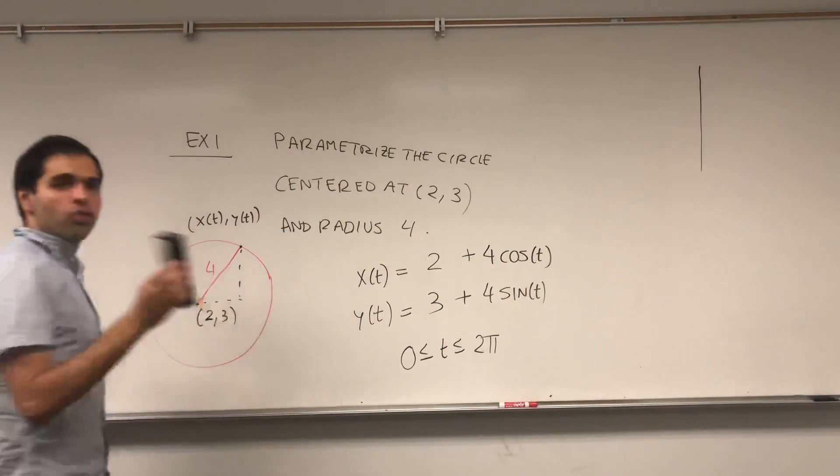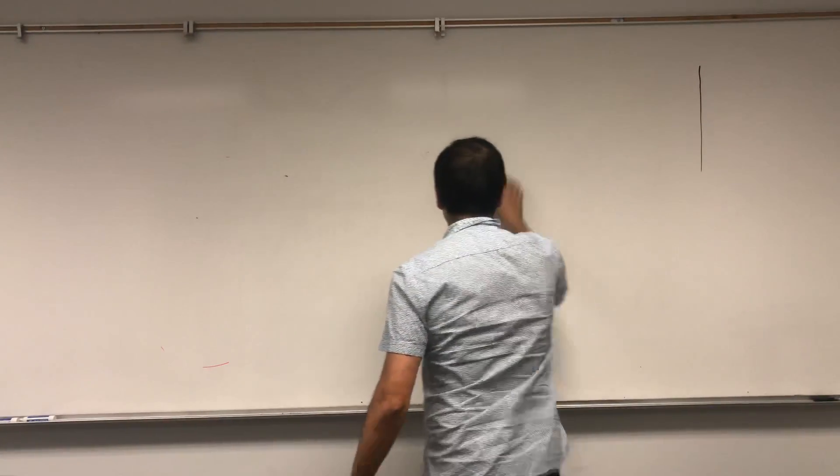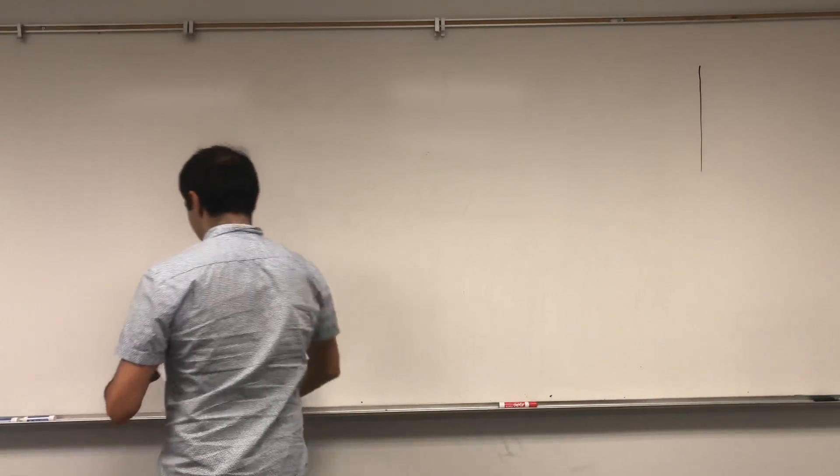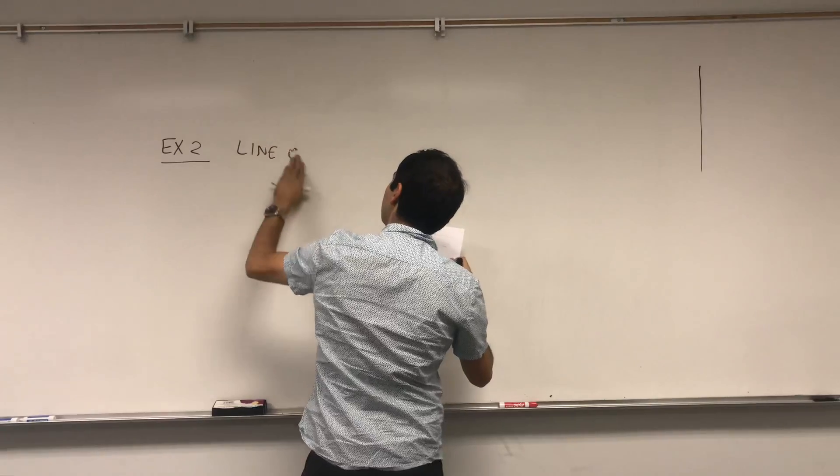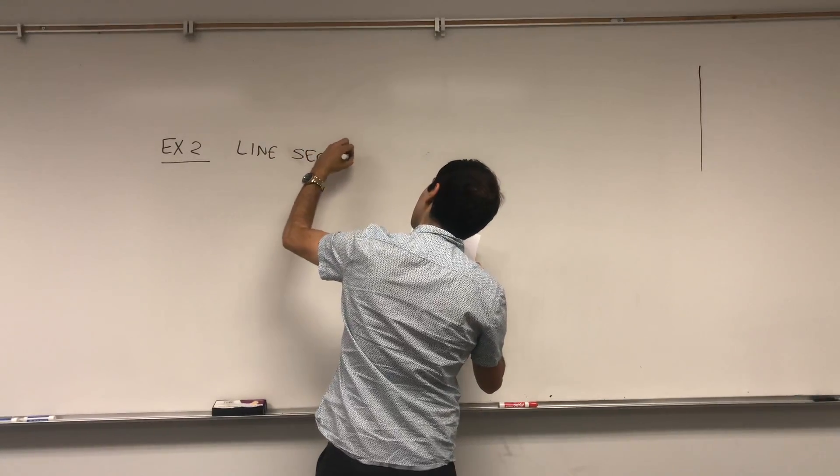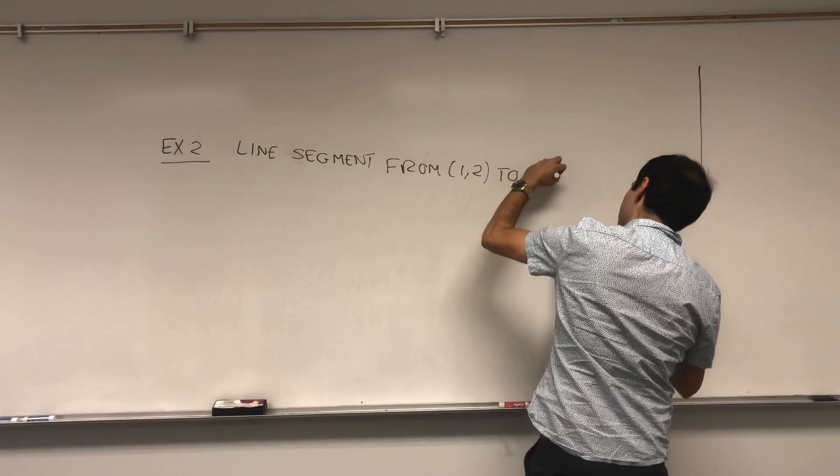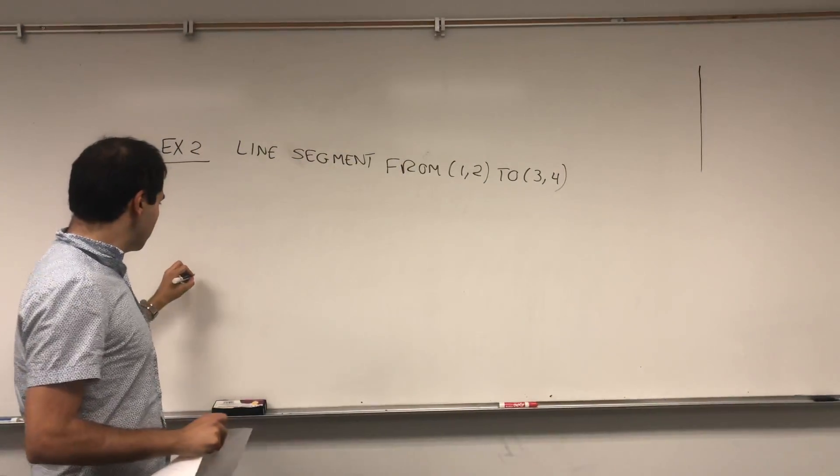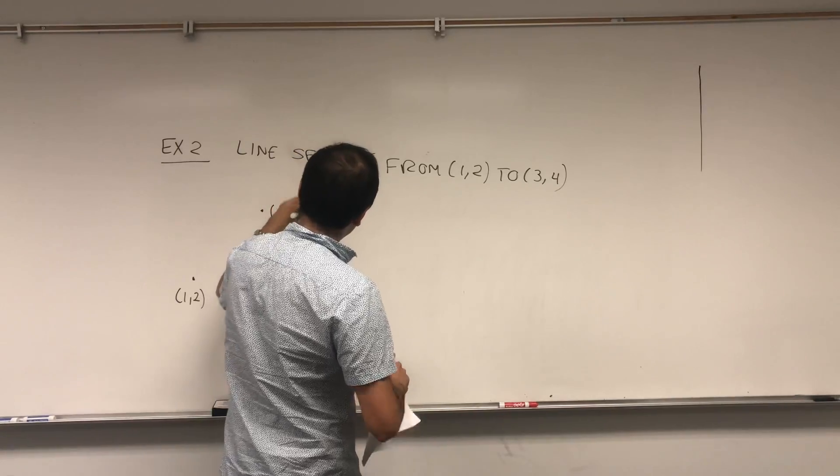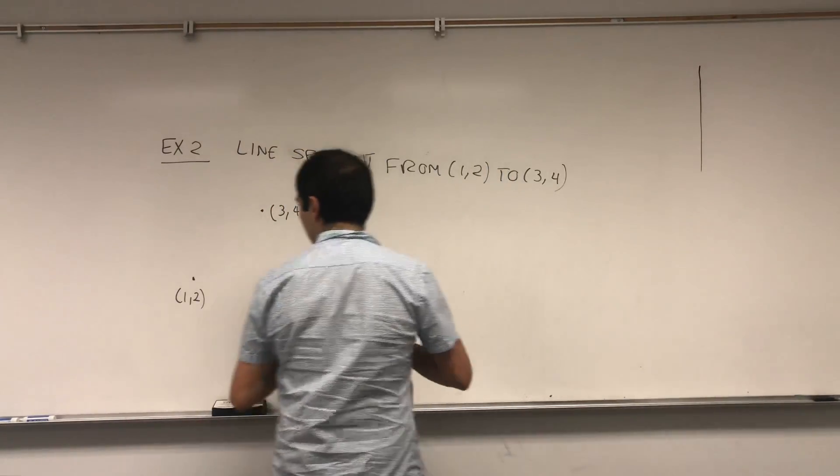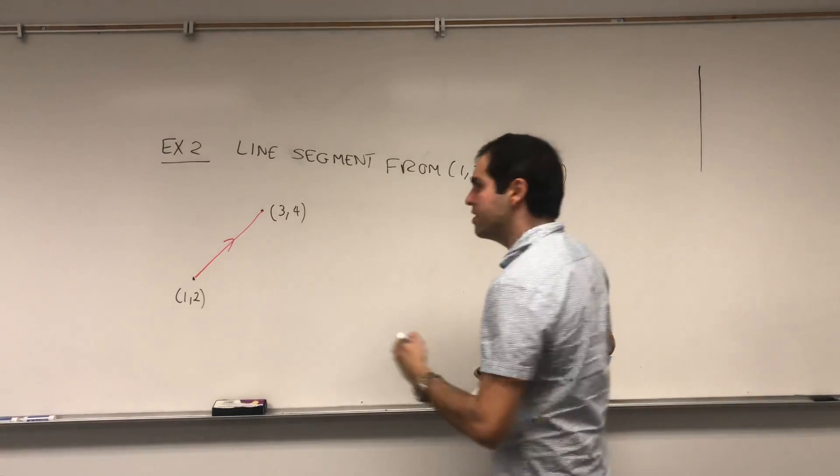The next one also occurs a lot, which is the line. Okay, so let's parametrize a line segment. Two, same, but the line segment from 1, 2 to 3, 4. And again, what you're doing is you're starting at the point 1, 2, and you go all the way up to the point 3, 4.